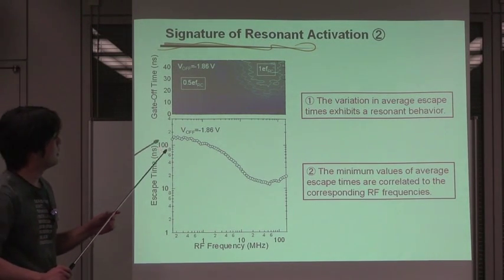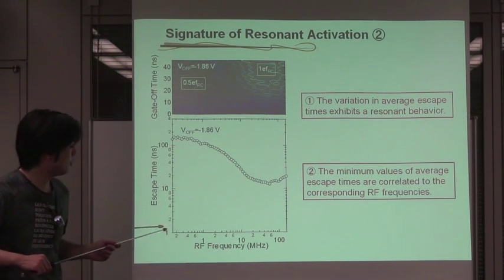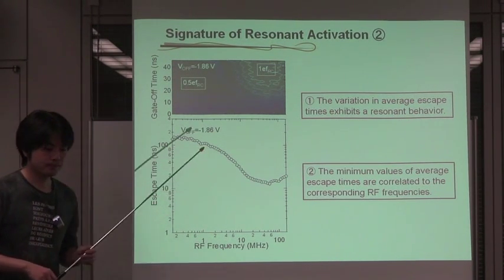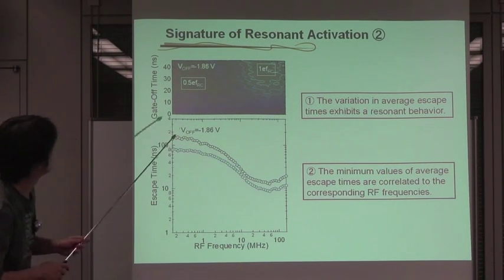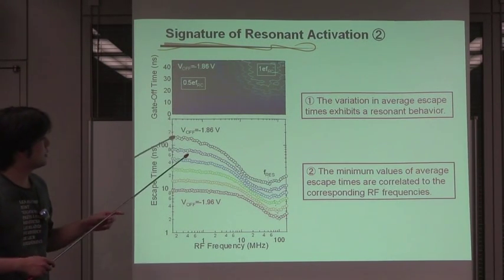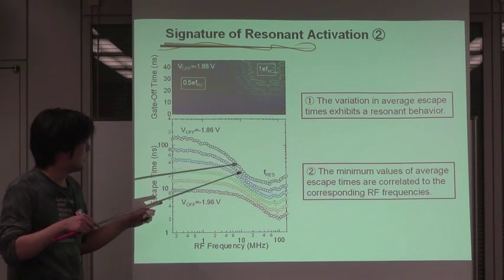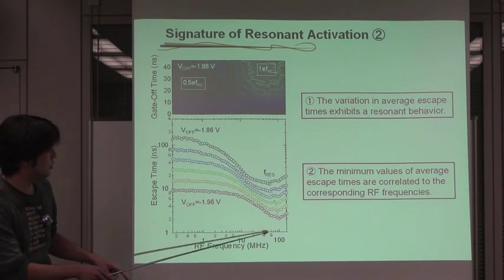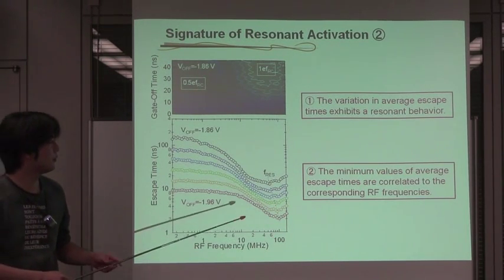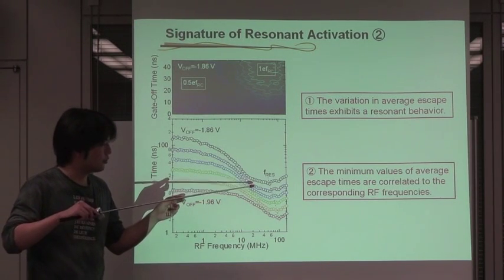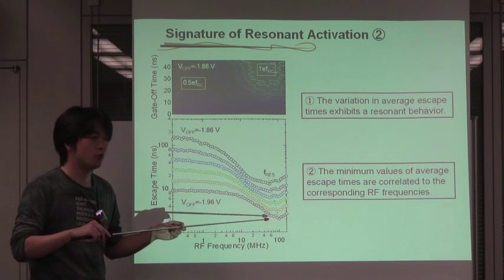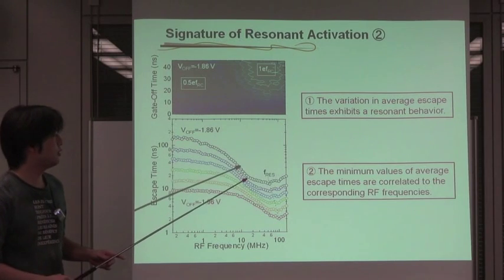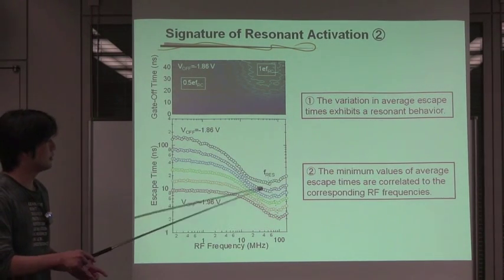The average escape times are plotted as a function of RF frequency. As you can see, the average escape time shows resonance. Even by changing the gate R voltage, we can see the similar resonant behavior. Please note, the average escape rate is around 100 megahertz, and the resonant frequency is also around 100 megahertz. In addition, the shorter average escape time requires the higher RF frequency. Hence, the minimum value of the average escape times are correlated to the corresponding RF frequency along this dotted line.